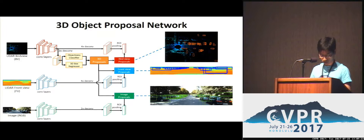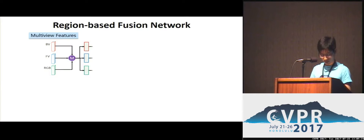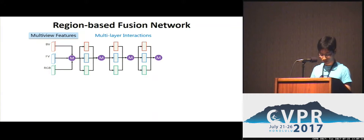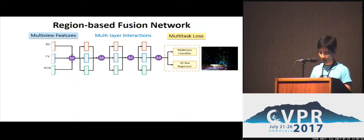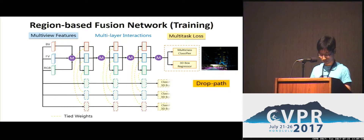ROI pooling is applied to each view to obtain multi-view features of each proposal. Given the features of each view, we introduce a region-based fusion network to learn multi-modal features. We enable multi-layer interactions by iteratively fusing and transforming multi-view features. Finally, a multi-class classifier and a 3D box regressor are used to predict the final 3D bounding box. During training, we regularize the network using a dropout training strategy and adding auxiliary branches, which share weights with the main branch.